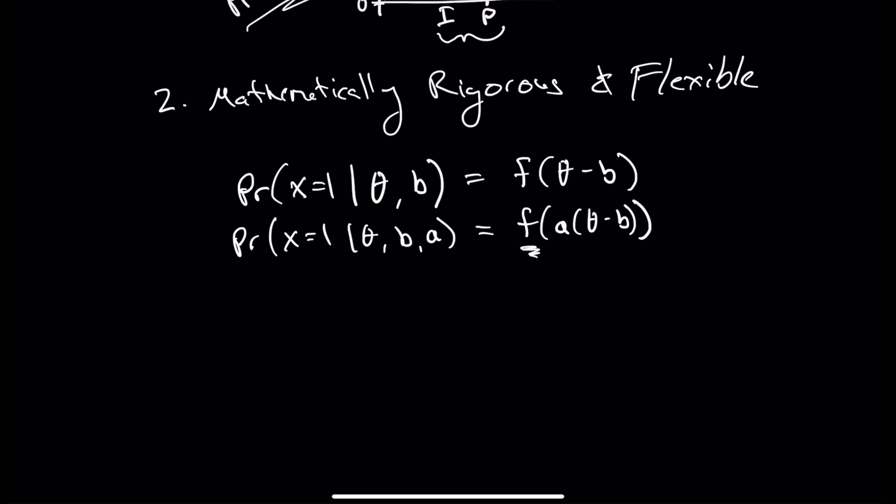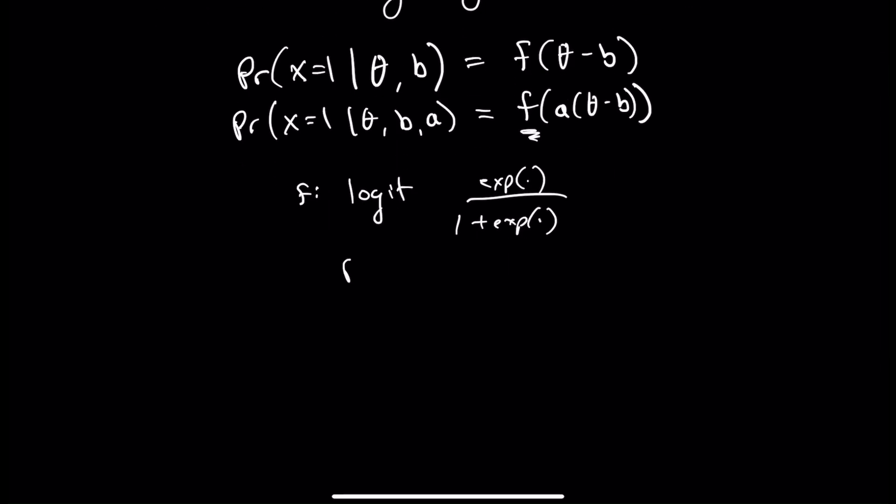Another part of the mathematical rigor is that we can define what that function or mapping is. And so F might be a logit transformation, which has the form of exp over one plus exp. And that allows us to make definitive statements, not only about the probability, but what that form takes on. It might similarly be probit.